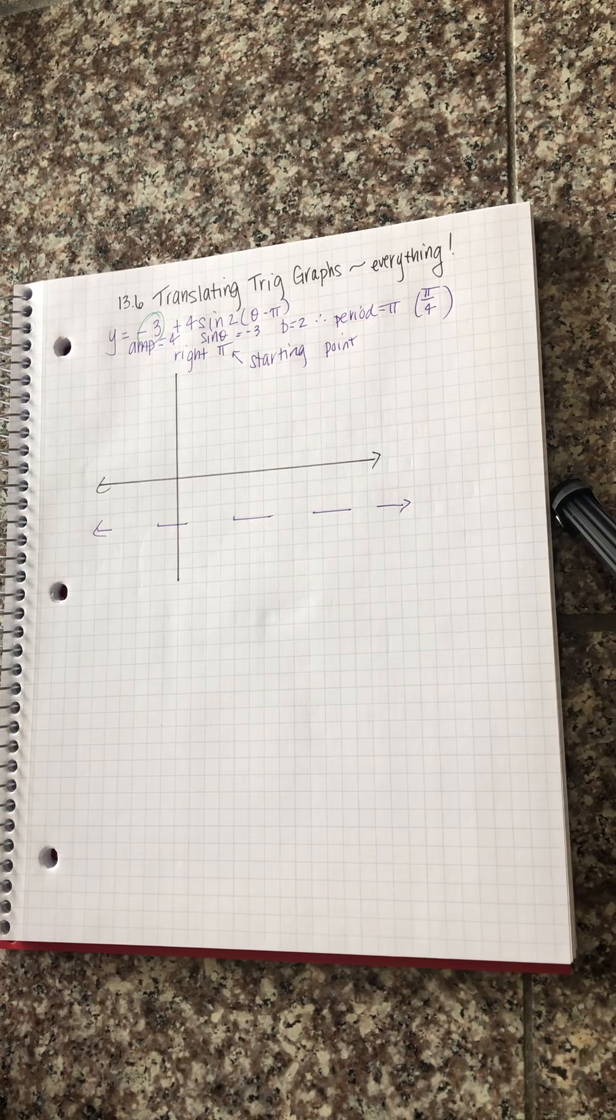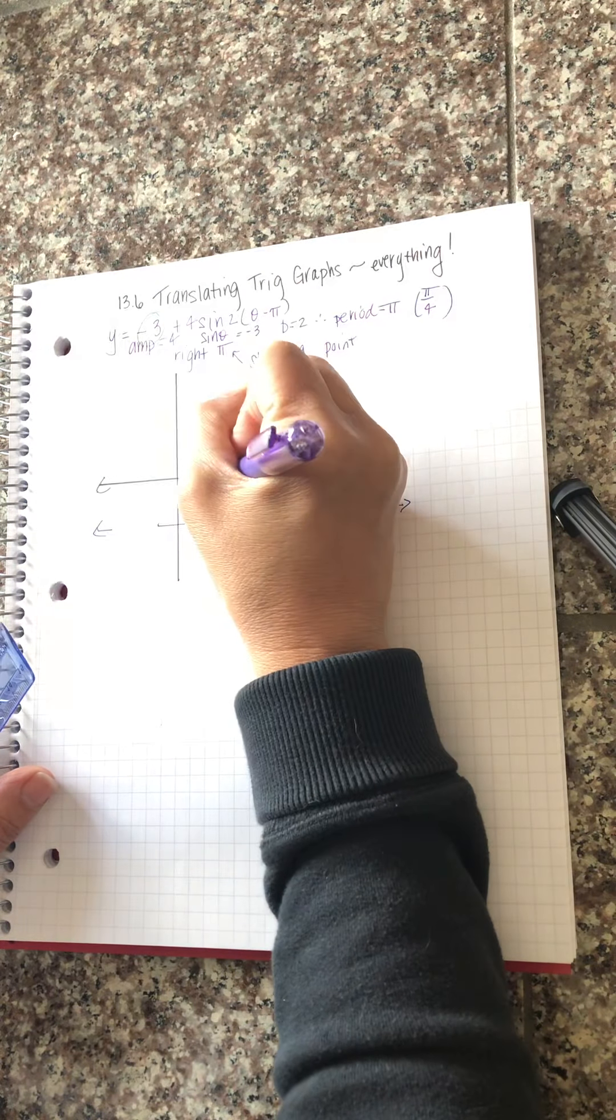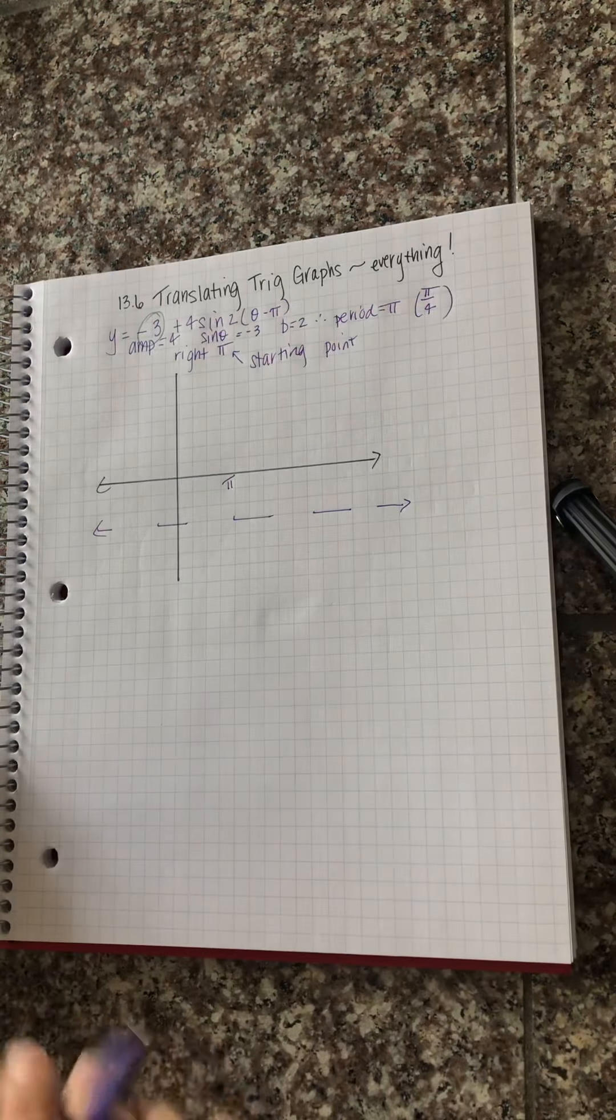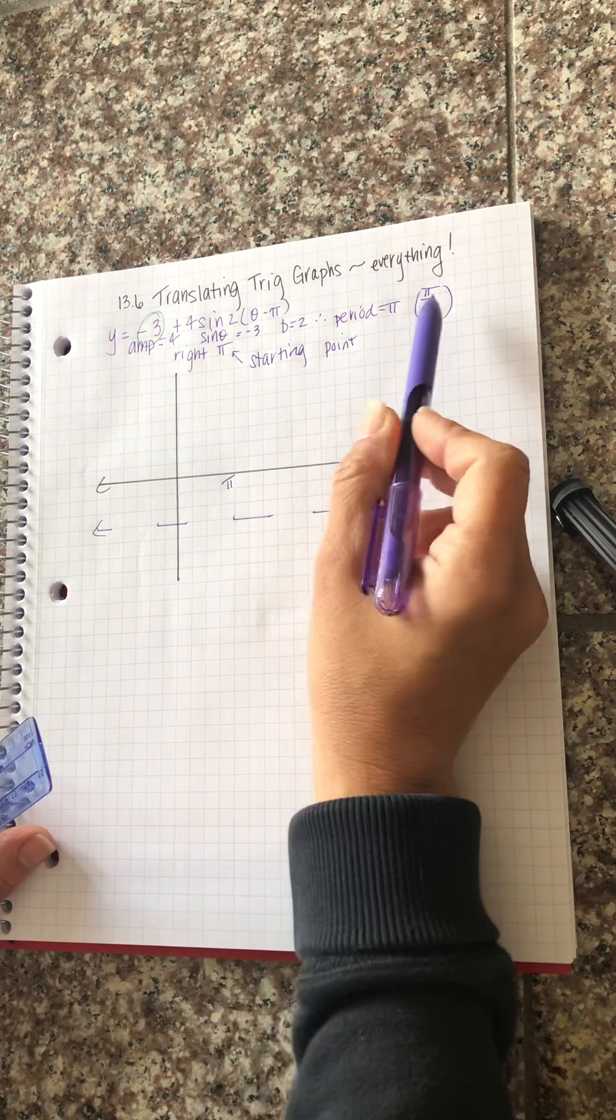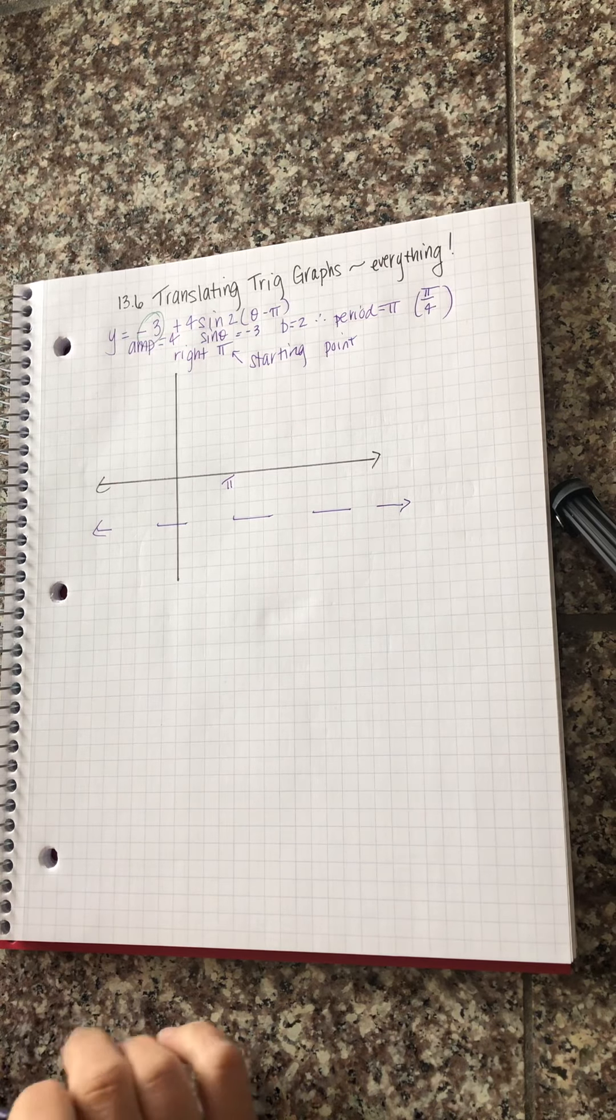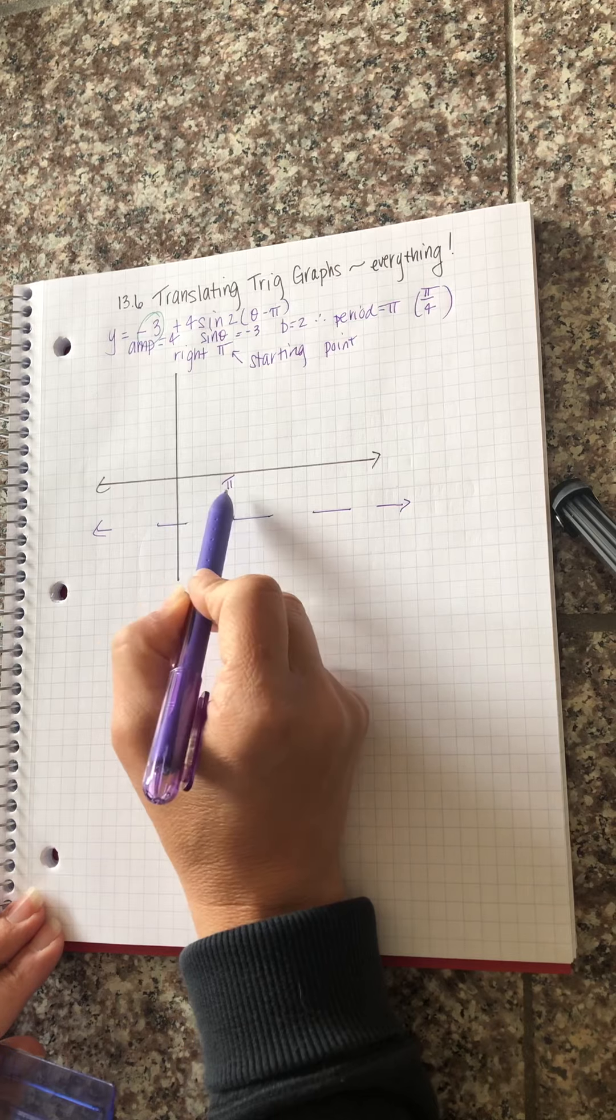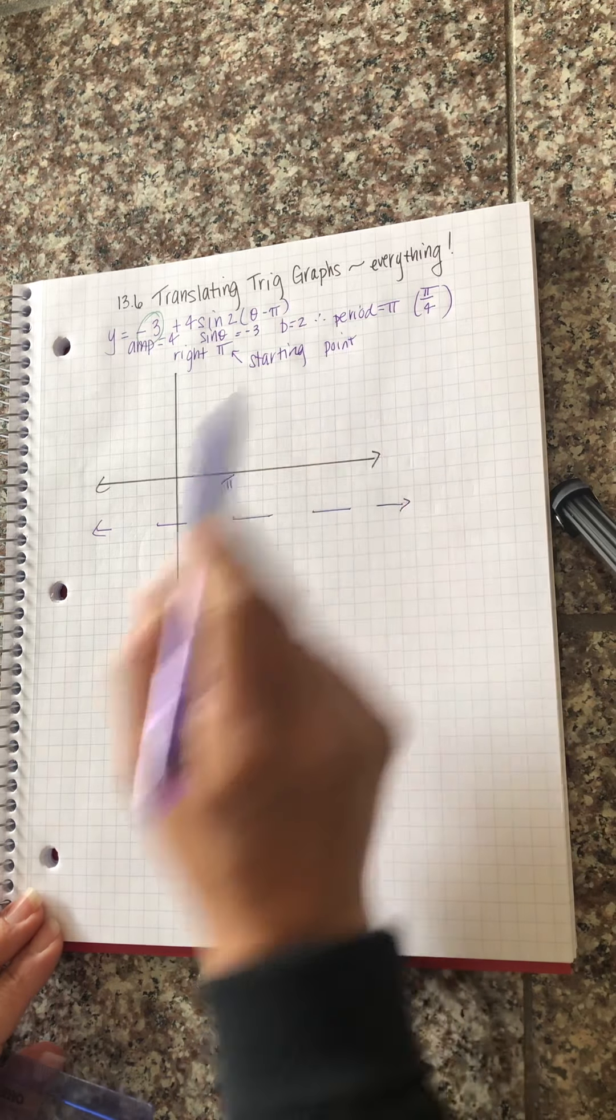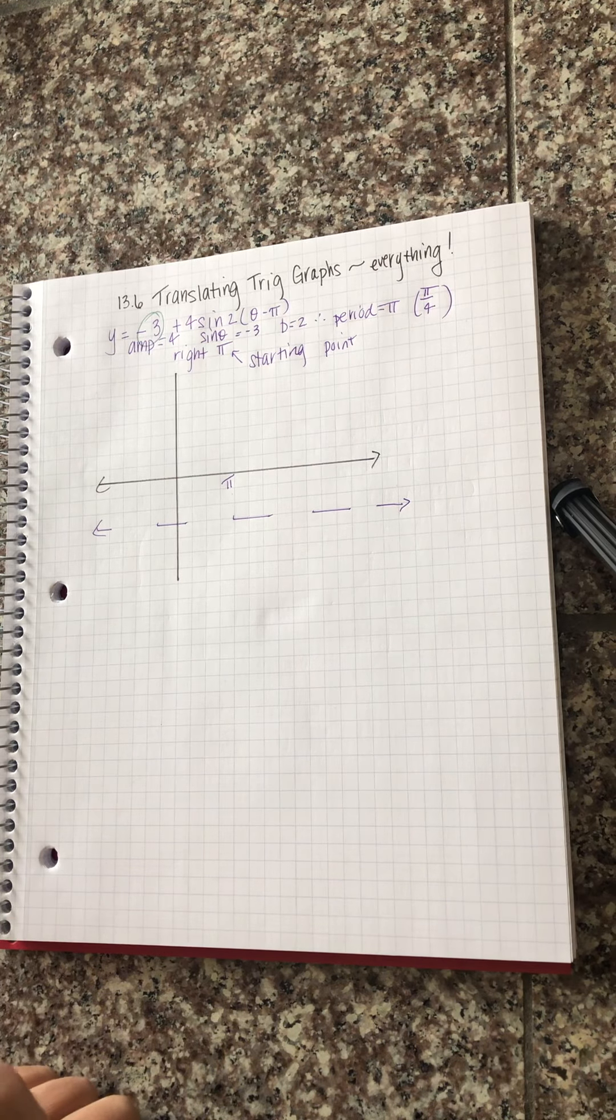So if I'm going to be shifting right pi, I counted one two three four and the reason I did that is because the increments that I need are pi over four. I counted four increments to get to pi. So that matches pi divided by four is pi over four.